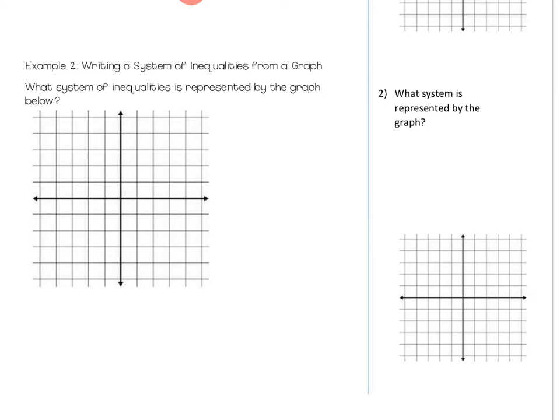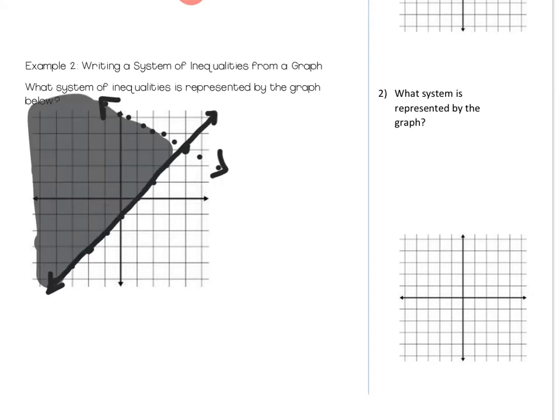Alright, example two. We want to write a system from what we've been given here. So we're going to write two different inequalities. So we're going to write one for this one, and one for this one. And you can pick which one you want to write first. It doesn't matter.